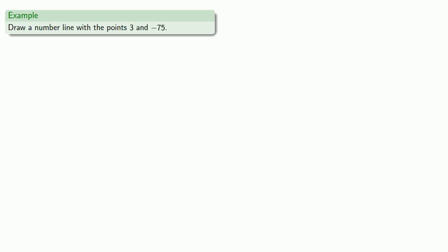Now, counting spaces works all right if we have small numbers. But if we have larger numbers, that gets a little bit tedious. So let's draw a number line with our points 3 and negative 75, and we'll talk about the secret of graphing. So we'll draw our origin and our horizontal line that represents the number line.